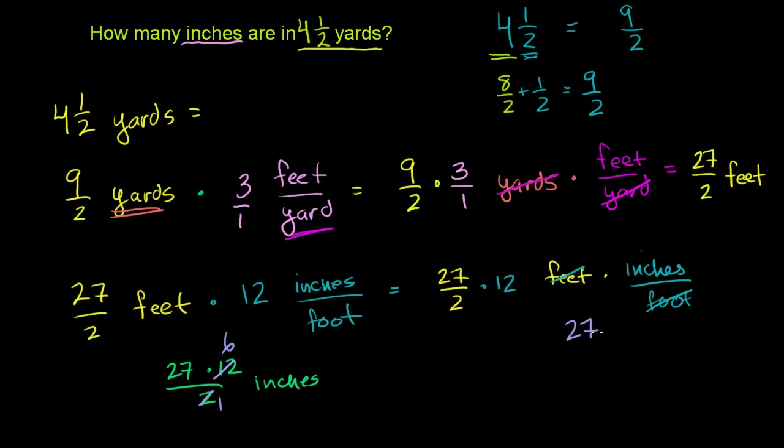27 times 6. 7 times 6 is 42. 2 times 6 is 12. Plus 4 is 16. So it's equal to 162 inches.